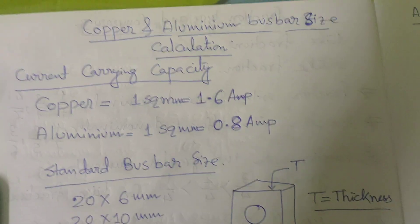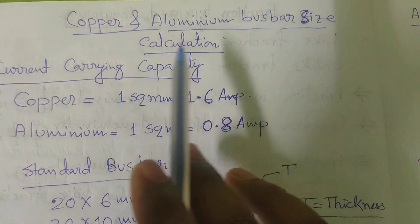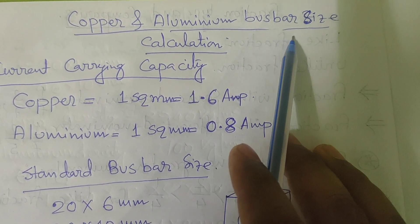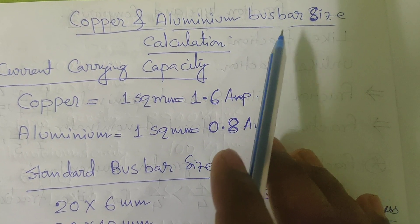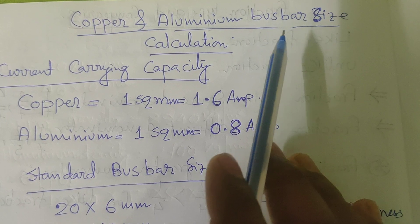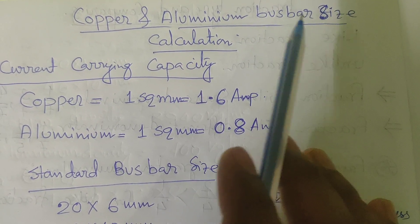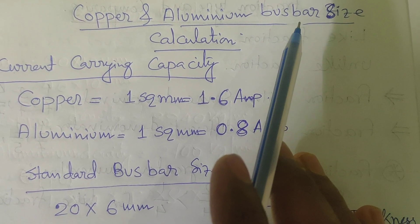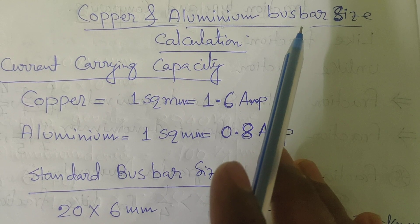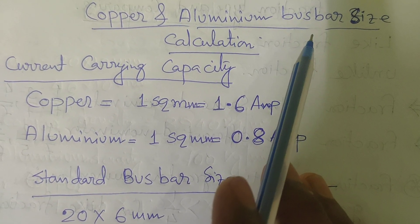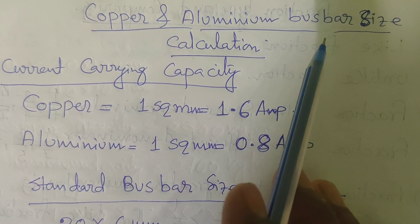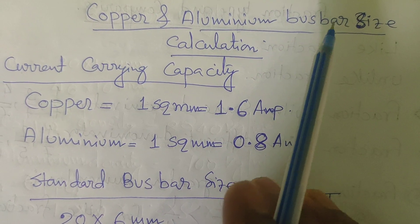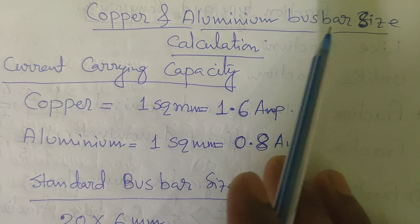Today our discussing topic is about copper and aluminum busbar size. A busbar is a material or equipment through which a lot of current and lot of voltage can be sustained, and lots of current can be carried out and passed through. From the busbars we are providing lots of parallel connections to distribute loads throughout the area or zone. So busbar is a center point where all the accumulation of current passes through.